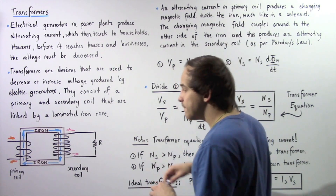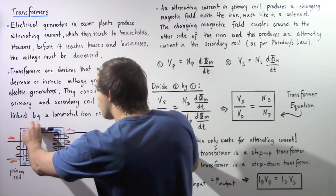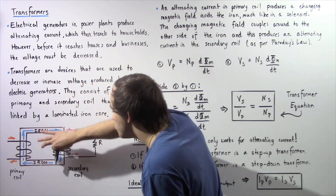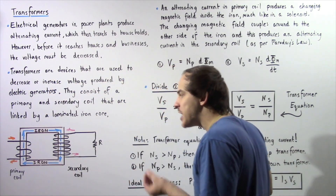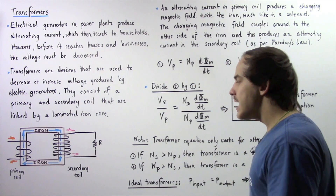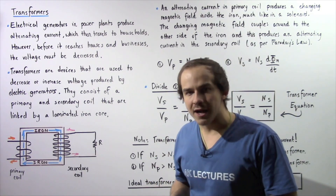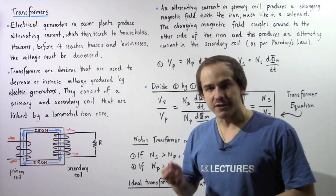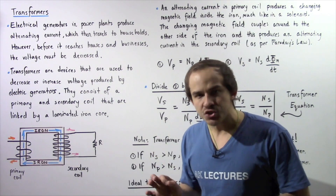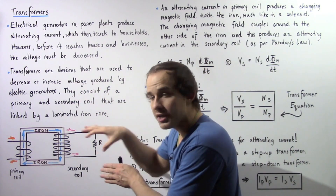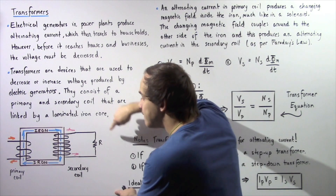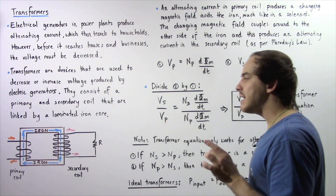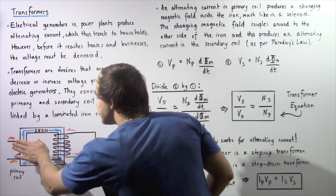That changing magnetic field then travels through the iron. When it travels through the loops of the secondary wire, that changing magnetic field induces a change in magnetic flux. And by Faraday's law, whenever we have a changing magnetic flux, that will essentially induce an EMF inside the wire. So an EMF — a voltage — will be induced in the secondary coil.